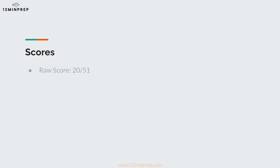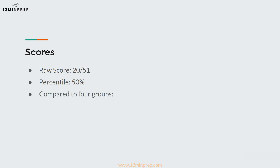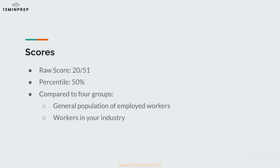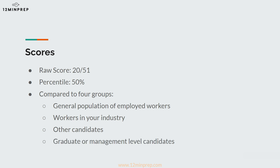When you complete the test, you will receive a raw score, which is just a total number of questions out of 51 that you answered correctly. Your raw score will be converted into a percentile score to compare you against other candidates. Employers may compare your score to four main groups: the general population of employed workers, workers in your industry, other candidates competing for the same job as you, and graduate or management-level candidates.